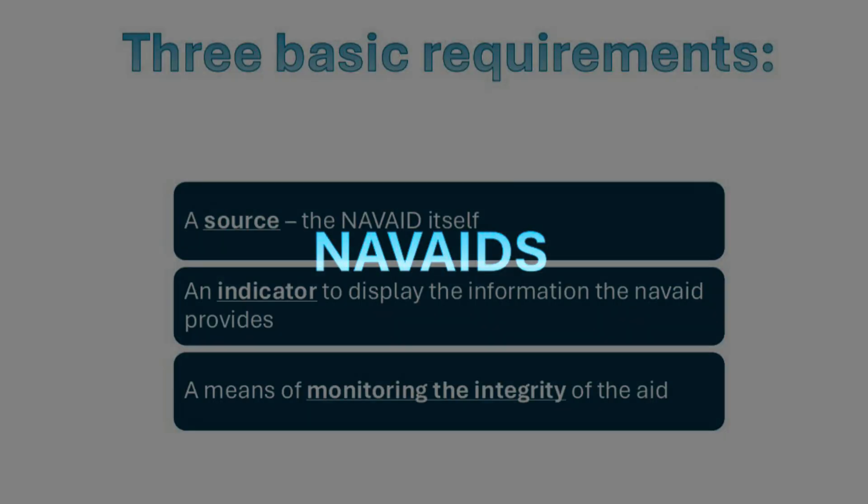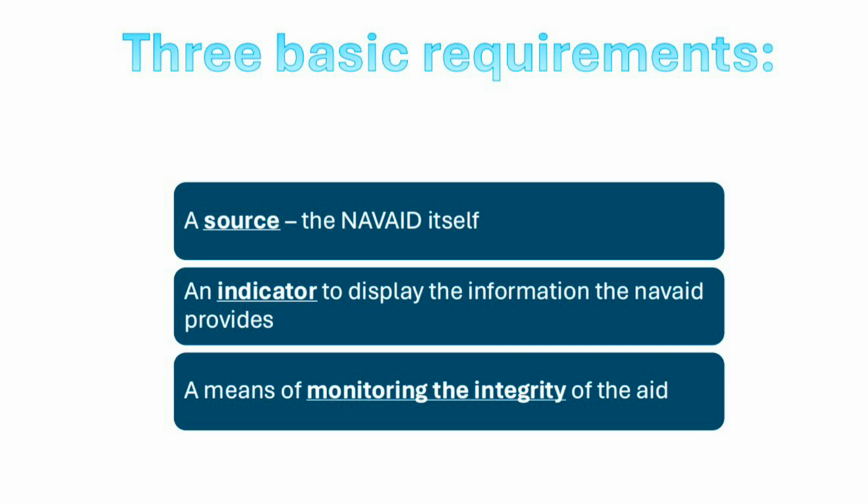When it comes to using a NAVAID for IFR, we have three basic requirements. We need a source, and that's the NAVAID itself — so that could be an NDB, a VOR, the GPS, or the ILS — and that's the information that we're receiving, sometimes called the receiver. We also need to have an indicator that's actually displaying the information to us in a way that we can interpret it, so that we know what the NAVAID is actually telling us.